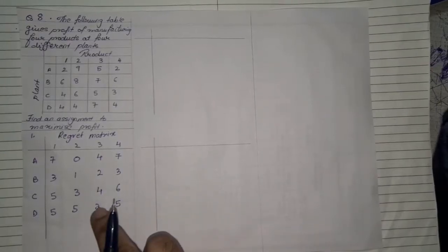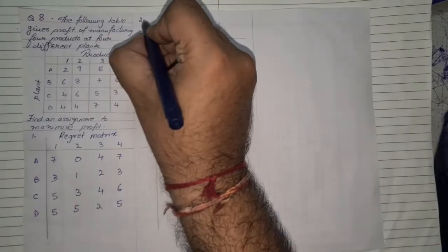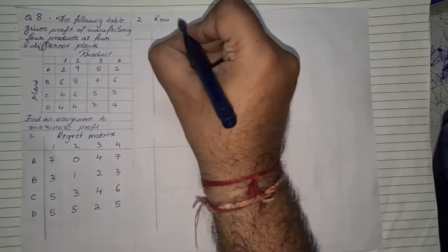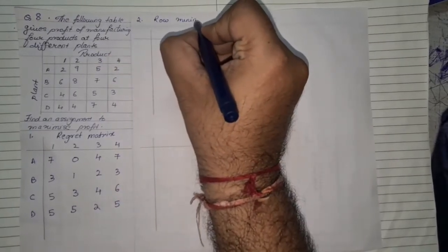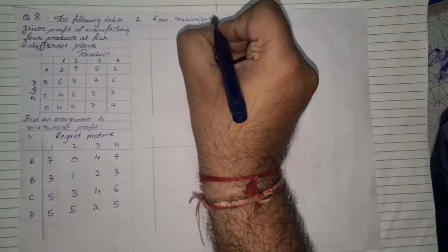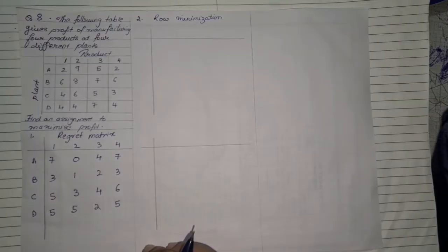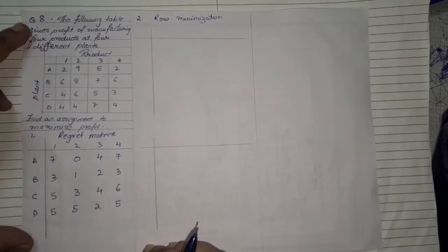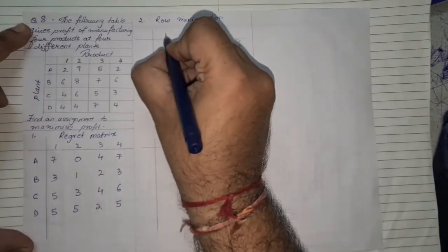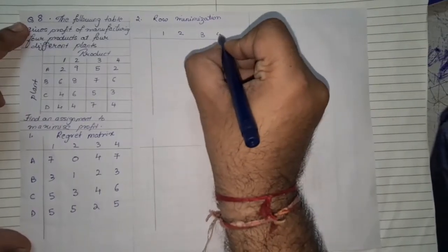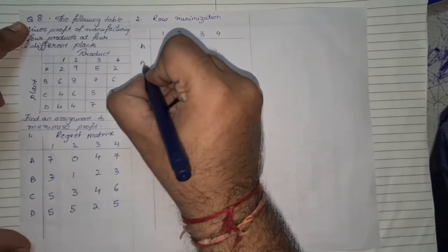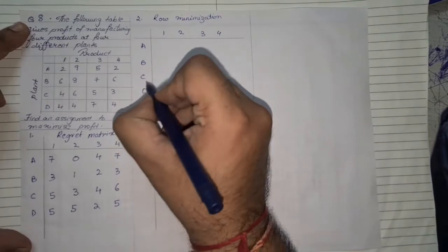Once you are done with that matrix the next thing we will have to do is row minimization. In order to make row minimization from each row from the regret matrix we will pick up the lowest value and then we will have to subtract that value from all other numbers in that particular row. So we made the structure this is one, two, three and four and this is A, B, C and D.